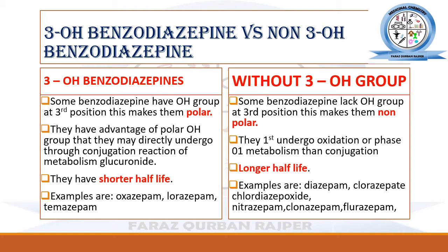These benzodiazepines have a longer half-life compared to those with the 3-hydroxyl group. Examples without the 3-hydroxyl group are diazepam, clorazepate, chlordiazepoxide, nitrazepam, clonazepam, and flurazepam. All of these lack any substitution at the third position — they lack the hydroxyl group at the third position.